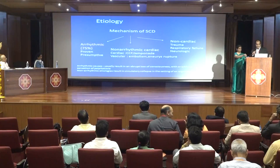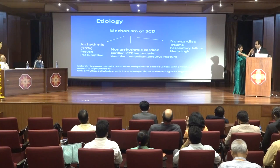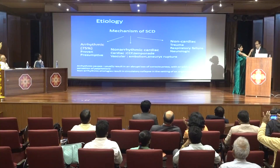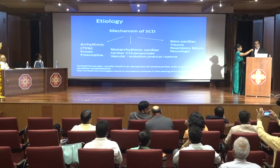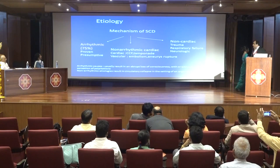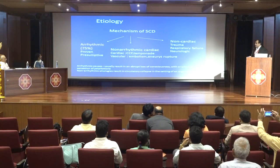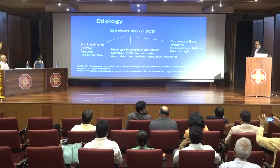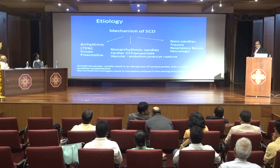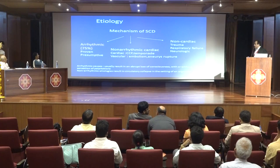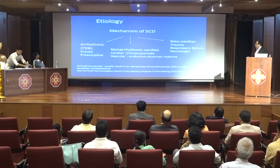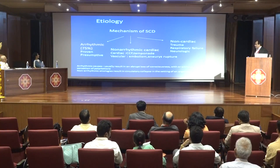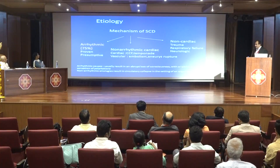Regarding the mechanisms of sudden cardiac death: 75% of cases are arrhythmic, either proven or presumptive. Non-arrhythmic causes include cardiac causes such as cardiac failure or cardiac tamponade; vascular causes, although rare, like embolism or aneurysmal rupture; and non-cardiac causes such as trauma, respiratory failure due to asthma, or neurologic events like a bleed.